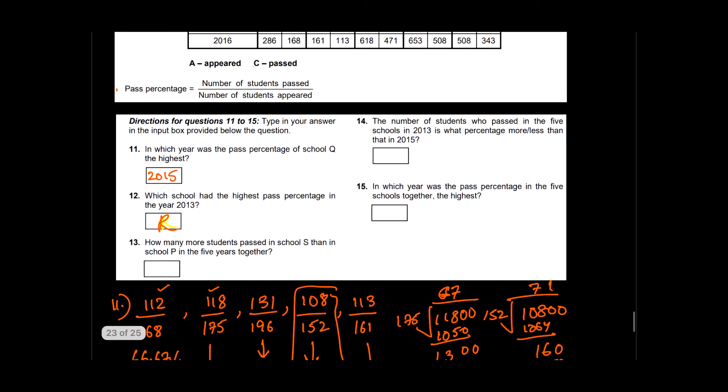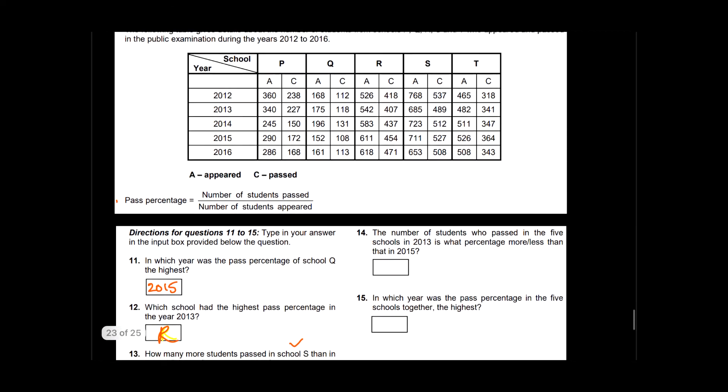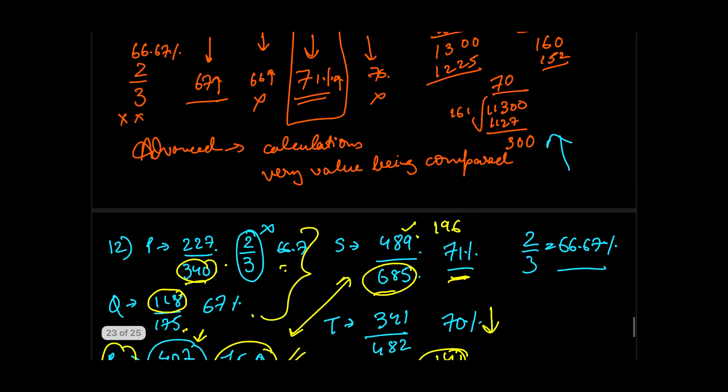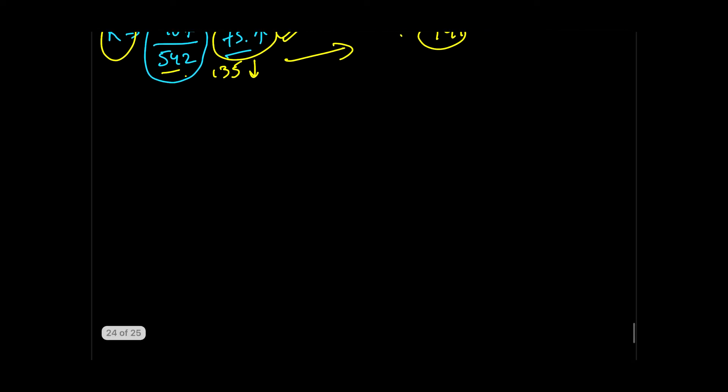Let's quickly have a look at the question. Question number 13 says, how many more students passed in school S than in school P in five years together? This seems direct data to me where I have to just make a comparison between school S and school P in all five years. This is school P, this is school S. I have to add up the numbers and find out the difference.